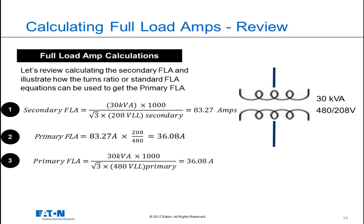One, I'm going to leverage the turns ratio of the transformer, and I do that in equation number 2. To calculate the primary full load amps by using the turns ratio, I take the secondary full load amps, and I multiply that by 208, the secondary voltage, and divide it by the primary voltage, which is 480 volts. And I arrive at 36.08 amps.